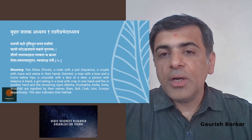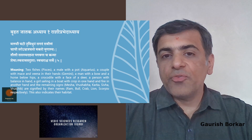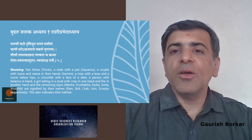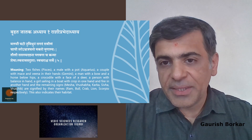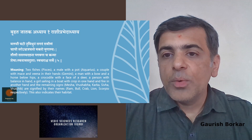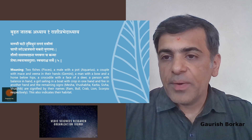As we go through the content, we will learn what exactly that means and what it indicates. The stanza says: two fishes — that's Pisces; a male with a pot — that's Aquarius; a couple with mace and vena in their hands — that's Gemini.